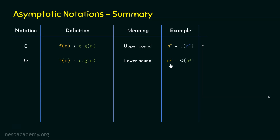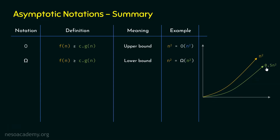For example, n² is big Omega of n², or we can say n² is the tight lower bound of n². Because on the right-hand side we can select some constant between 0 and 1 — for example c as 0.5 — making the right-hand side 0.5n², which is clearly less than n² on the left-hand side. Hence n² is big Omega of n². From the graph, we can observe that 0.5n² is asymptotically lesser than n², confirming that n² is big Omega of n².